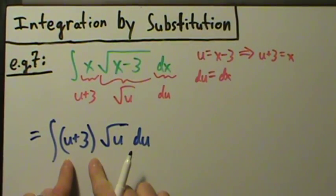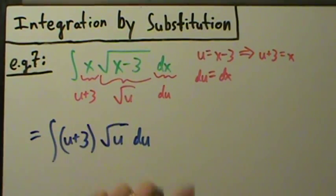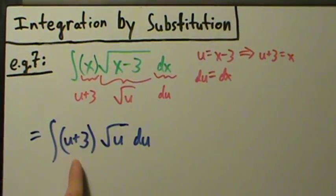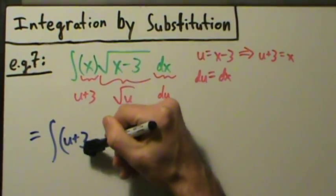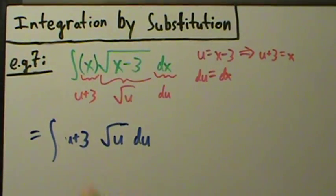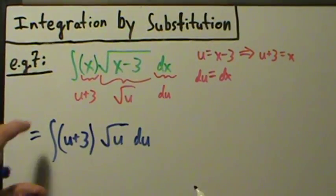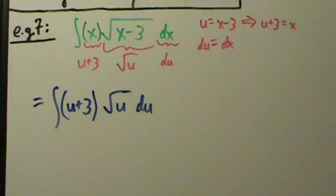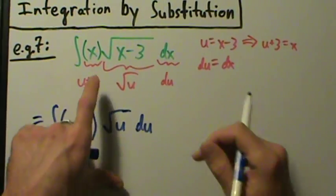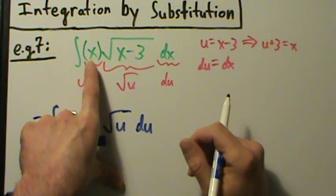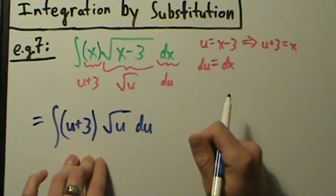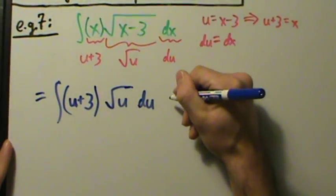Be very careful — we absolutely do need these parentheses because this x times square root of x minus 3 is really like this. Now x is being replaced by u plus 3. So if we don't have these parentheses, we're really saying just u plus 3 times the square root of u, which is completely different. We need the parentheses because there are implied parentheses up here that carry down. Now we can actually distribute, which we cannot do with the x underneath the square root — you can't push inside of the square root like that. But we can distribute into these parentheses and then have two separate terms to work with.